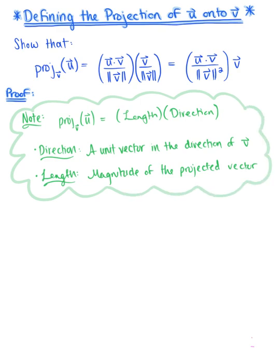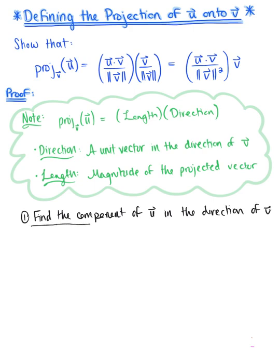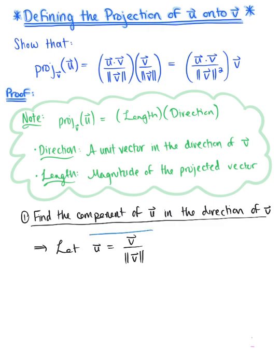In terms of direction, we need the components of vector u in the direction of vector v — in other words, we can think of a unit vector in the direction of vector v. So the first thing we need is the components of vector u in the direction of vector v. We'll simply let this be a unit vector in the direction of vector v — that is our direction.